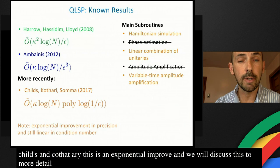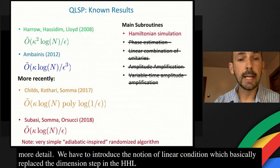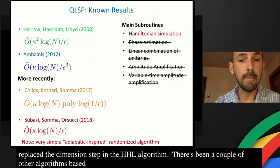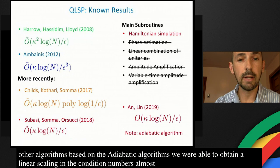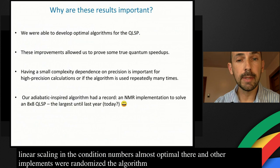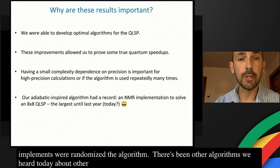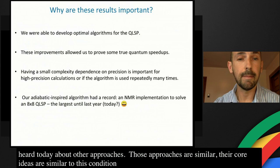To achieve this, we introduced the notion of linear combination of unitaries, which replaced the phase estimation step in HHL. There have also been algorithms based on adiabatic evolutions — a 2018 paper inspired by adiabatic evolution used a randomized algorithm to obtain linear scaling in the condition number, almost optimal. Further improvements by An and Lin essentially derandomized that algorithm. Other approaches heard about today have core ideas similar to linear combination of unitaries, approximating the inverse function.